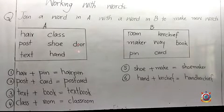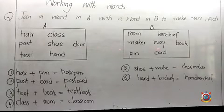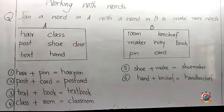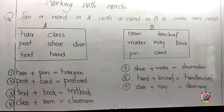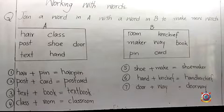Door plus way makes 'doorway'. This was enough for today. Today we did 'Guess the Word', question two of Part A, and in Part B we did question one — making new words by joining two smaller words.